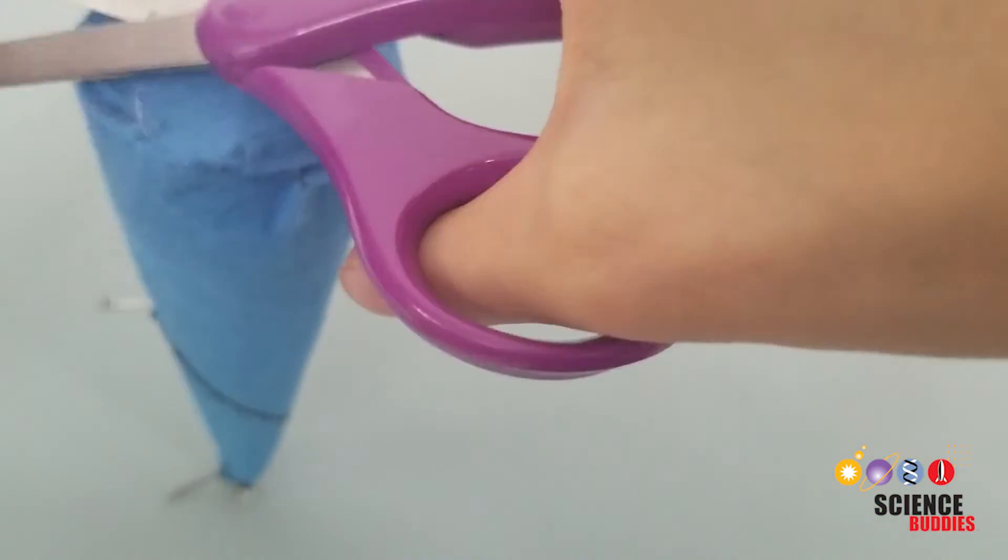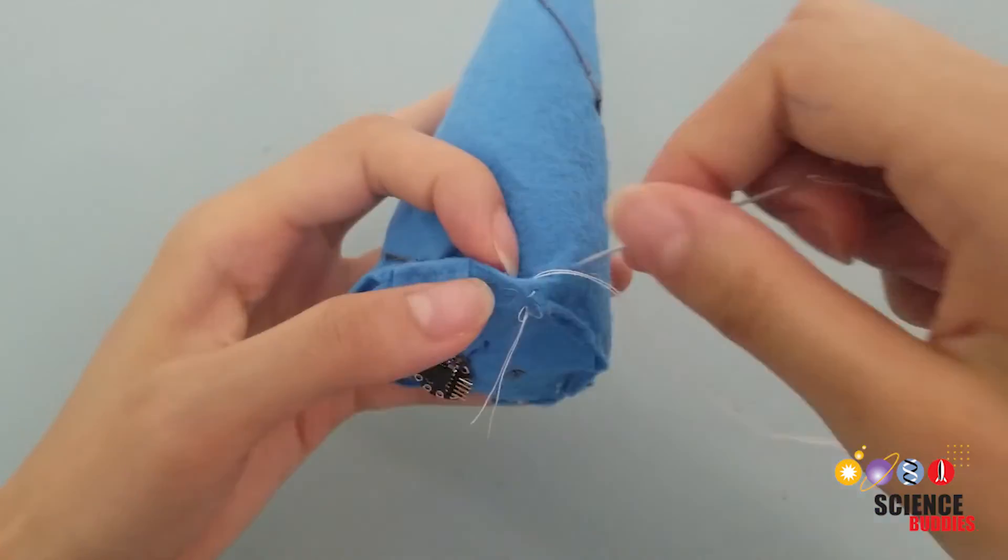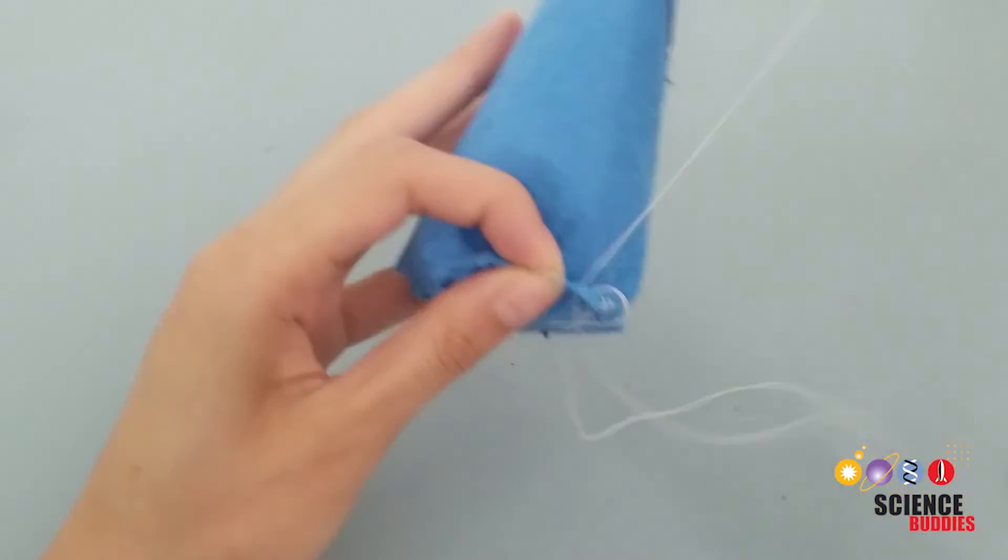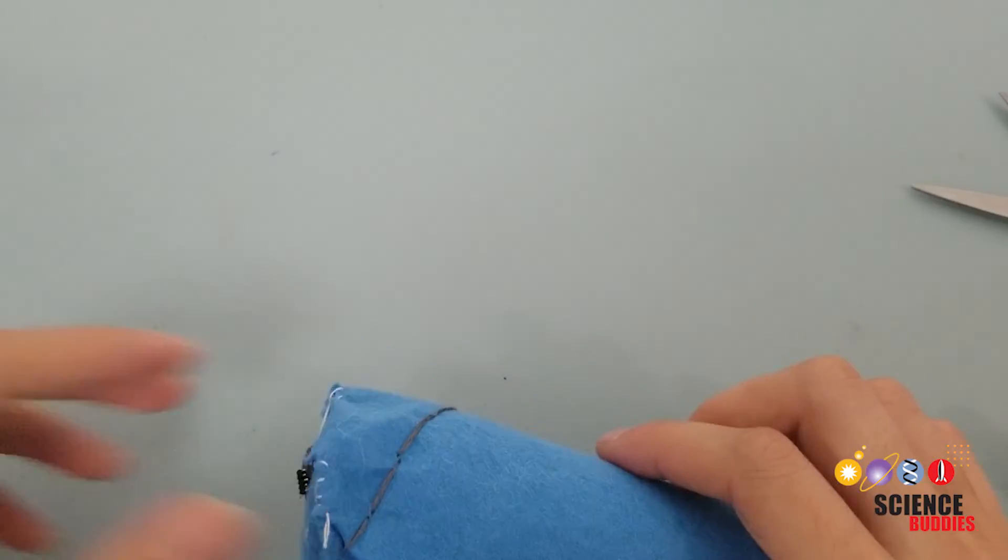Now with normal thread, not conductive thread, firmly stitch felt piece A to the horn. This stitch uses a double threaded whip stitch. See link below for tutorial.